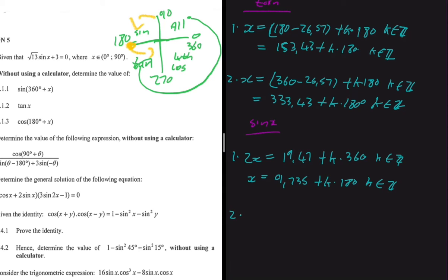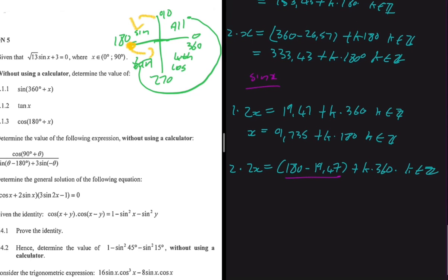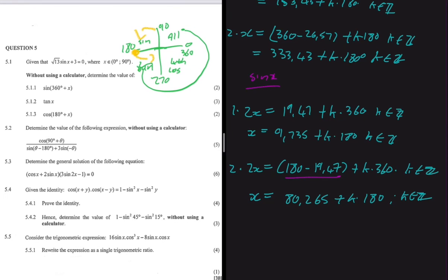Second quadrant for sine: 2x = 180° - 19.47° + k·360°, k ∈ ℤ. Dividing throughout by 2: x = (180° - 19.47°)/2 + k·180° = 80.265° + k·180°, k ∈ ℤ. That's all for this video — we'll do 5.4 and 5.5 in a separate video as this one is already too long.